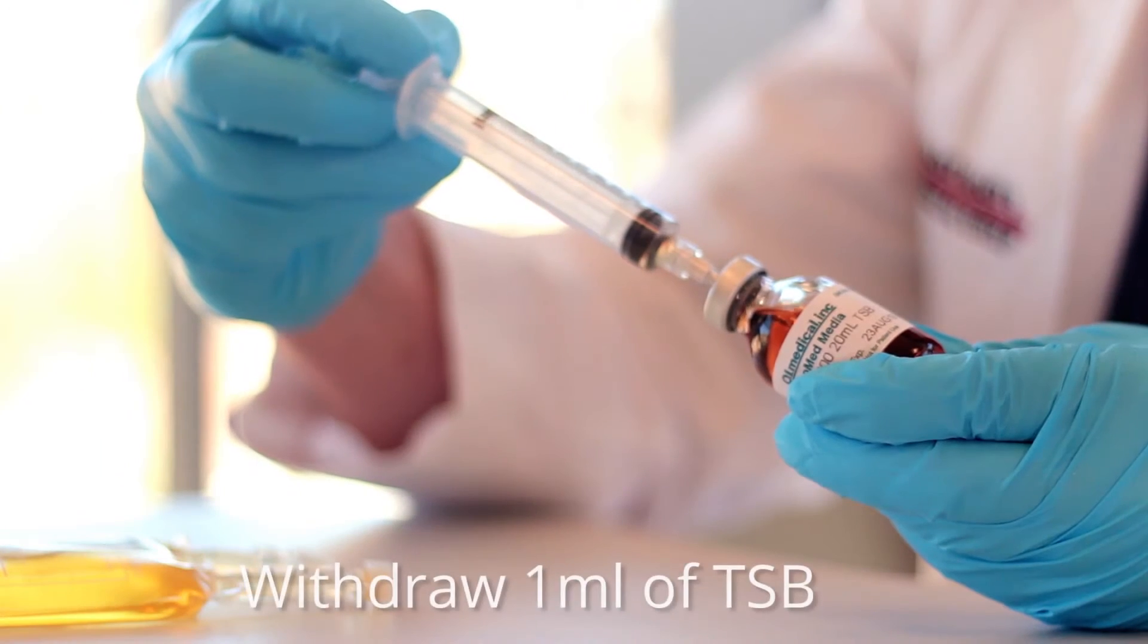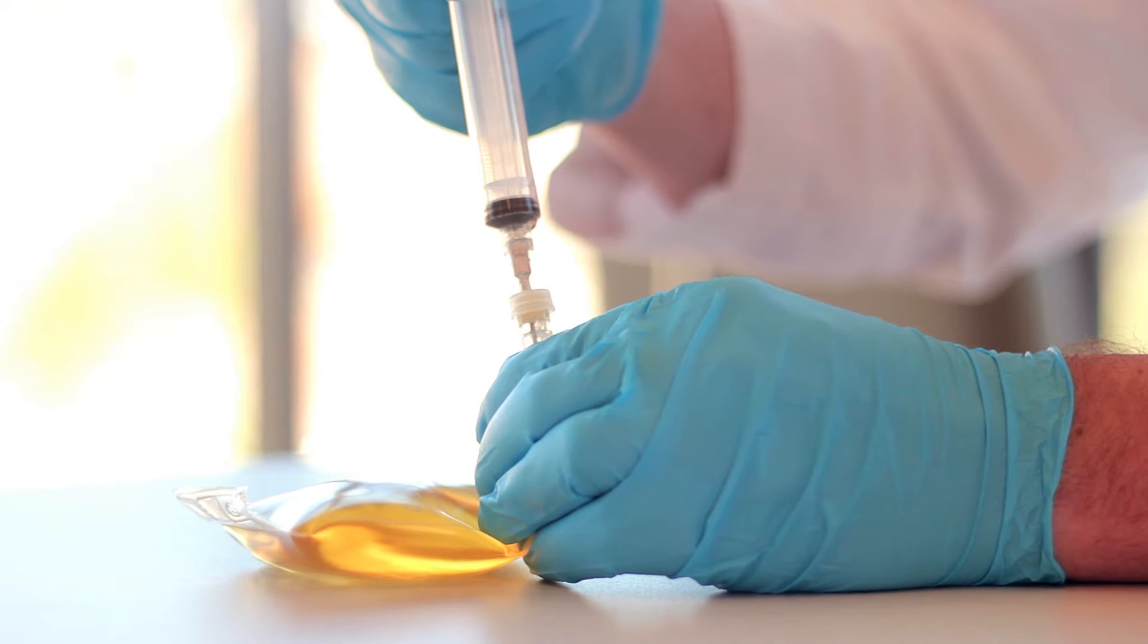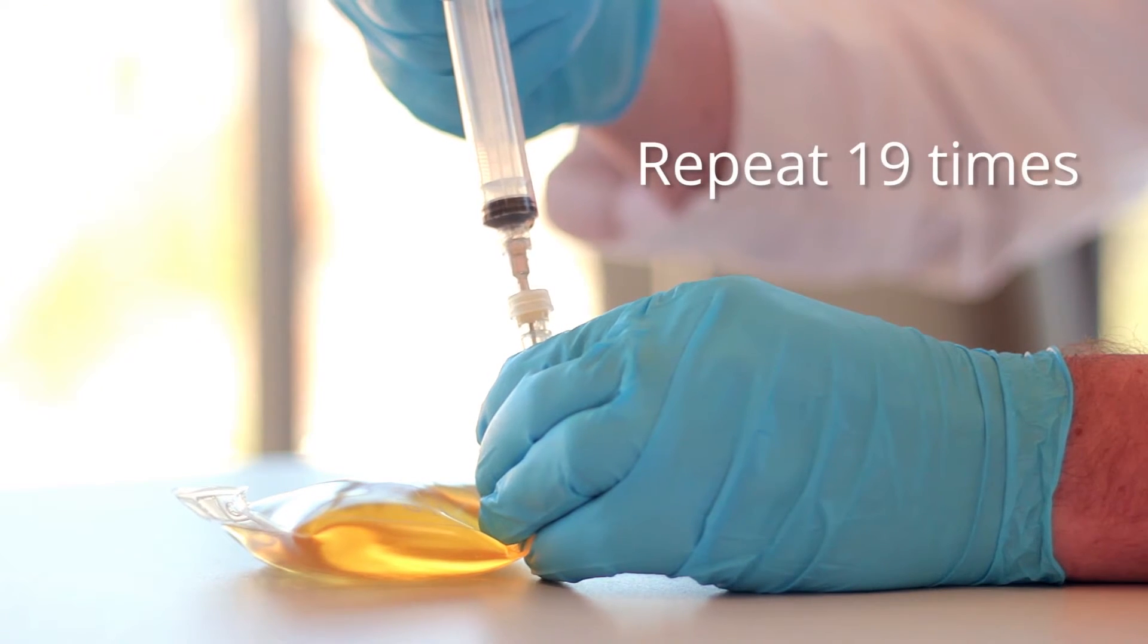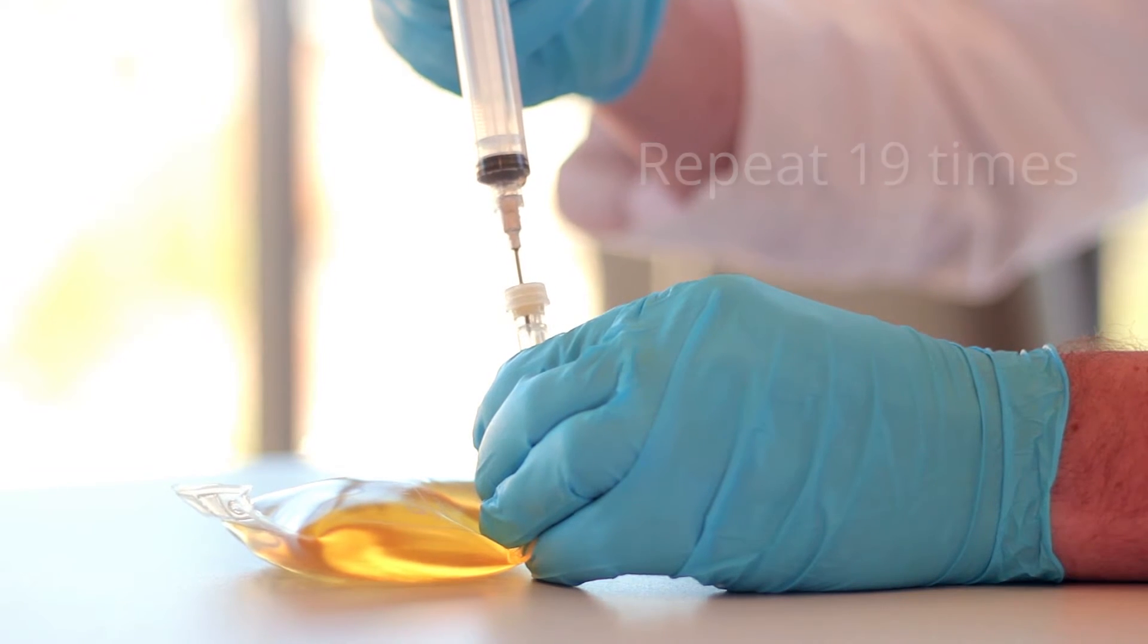Withdraw 1 ml of TSB from the GrowMed vial and inject it into the bag of sterile TSB. Repeat the procedure 19 more times, using 19 different needles but the same syringe and receiving bag of TSB.